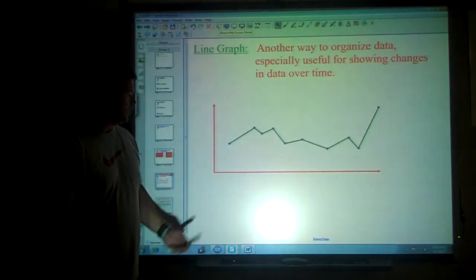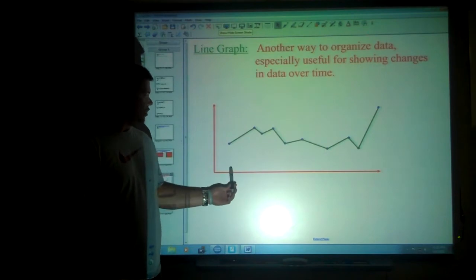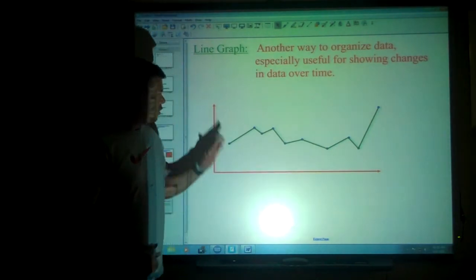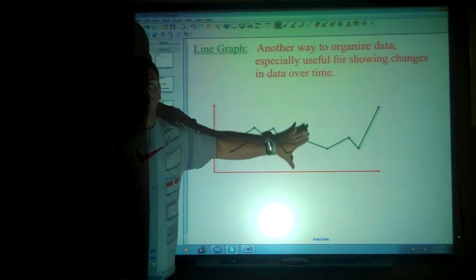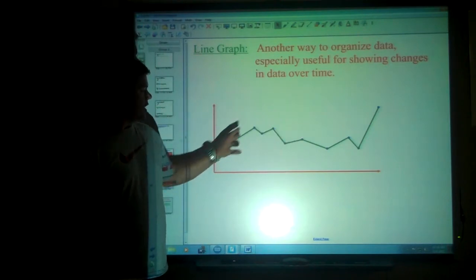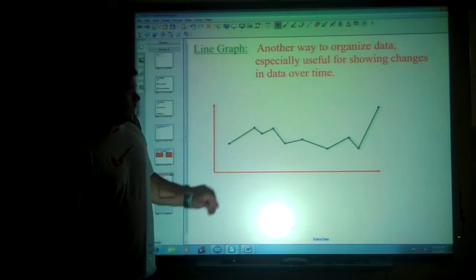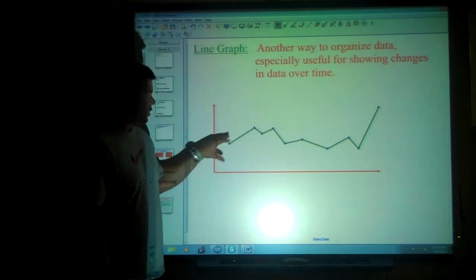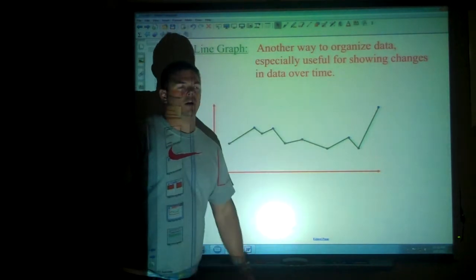But this is especially useful if you're showing the same particular item with change over time. As an example of this, say these were the different months of the year: January, February, March, April, May, June, July, etc. You could really get an idea of how things are changing. Oh, we had an increase from January to February. We had a decrease then. What happened? Oh, we picked things back up. Maybe these are your grades. Hopefully they finish off up there.